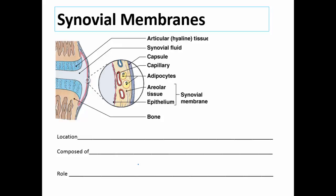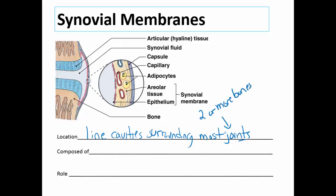Synovial membranes line cavities surrounding most joints. To clarify, a joint is where two or more bones connect. The type of joints that synovial membranes are found in are called synovial joints. They generally consist of connective tissue, and in this case it is areolar connective tissue.